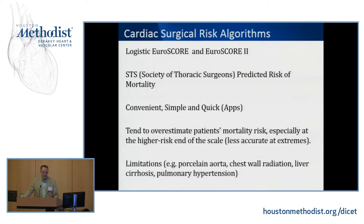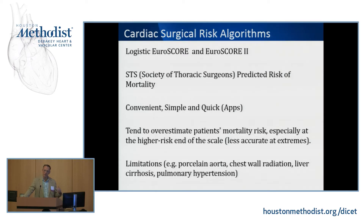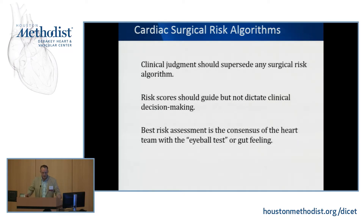These scores have never been fully validated for transcatheter aortic valve replacement since it's a different procedure. Limitations include a tendency to overestimate risk at the high end of the scale, and they don't incorporate factors like porcelain aorta, chest wall radiation, liver cirrhosis, or pulmonary hypertension — all of which increase surgical risk. Clinical judgment should supersede any risk algorithm; we use these scores to guide, not dictate, therapy.